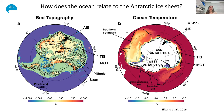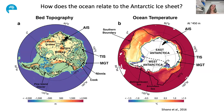So, how does the ocean relate to the Antarctic ice sheets? Here I'm showing two maps. On the left I have the topography of the Antarctic continent underneath the ice sheet, with a few glaciers and basins highlighted. For the East Antarctic ice sheet, we have highlighted the Totten ice shelf, the Emery ice shelf, the Mertz Glacier Tongue, the Ninnis and the Cook as key regions for this area.